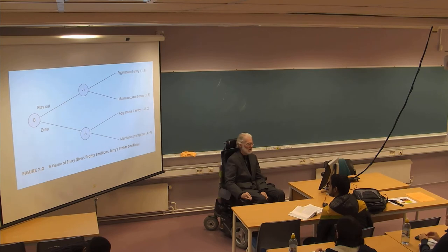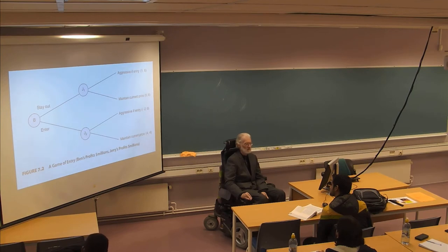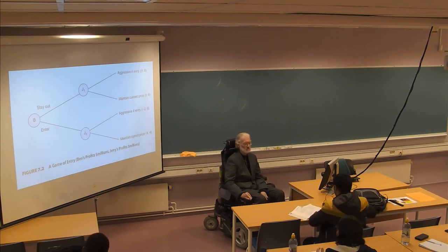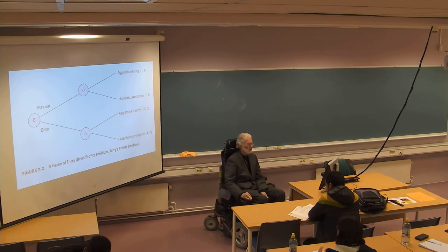If we break the game into the lower part of the figure — from G2 up to aggressive and maintain current — we see that sub-game also yields 4-4. Looking at sub-game J1, aggressive or maintain current, we end up at 1-6. So we have a sub-game perfect Nash equilibrium and conclude we end up at 4-4, confirming the first mover advantage was a good strategy. Ben will enter and capture a profit of 4.